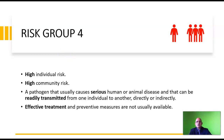Risk group 4 poses the highest individual risk and the highest community risk. A pathogen that usually causes serious human or animal disease and that can be readily transmitted from one individual to another, directly or indirectly, is categorized under risk group 4. Effective treatment and preventive measures are not usually available. This risk group includes respiratory viruses which pose a high individual risk and a high community risk. If vaccines and other therapeutic measures are not available to contain a specific biological agent, it must be categorized as risk group 4.